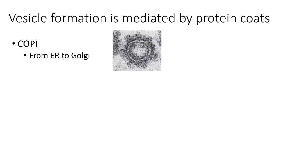This brings us to a good question: how do vesicles know where to go? If we have vesicles sending cargo to different organelles of the cell as well as to the outside, it's very important that the right vesicle with the right cargo ends up in the right location. As vesicles are being formed, the budding off of the vesicle is mediated by what we call protein coats. There are different types of protein coats that form depending on the vesicle's origin, location, and destination.